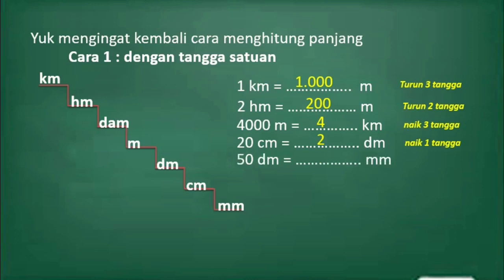Selanjutnya, lima puluh desimeter nilainya sama dengan berapa milimeter? Dari desimeter ke milimeter turun dua tangga, itu artinya dikalikan dengan seratus. Lima puluh dikalikan dengan seratus hasilnya adalah lima ribu.